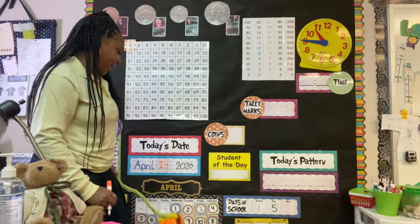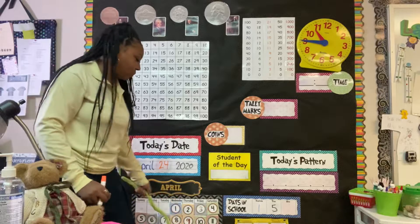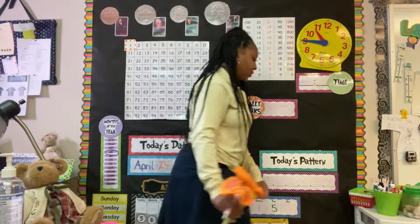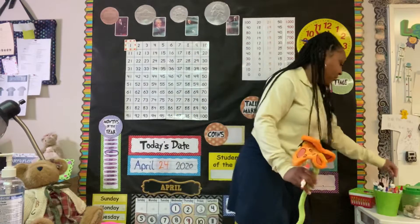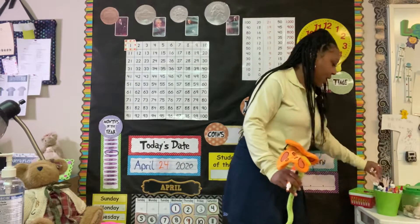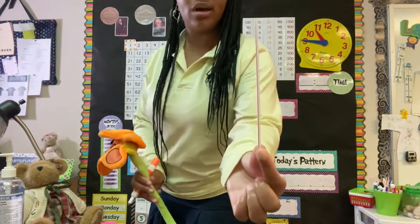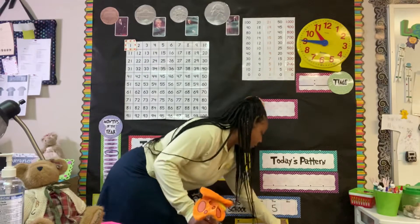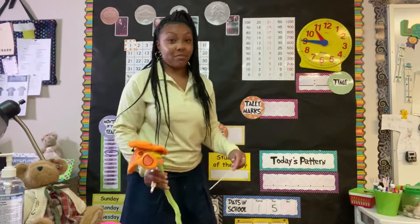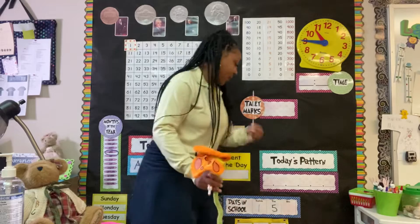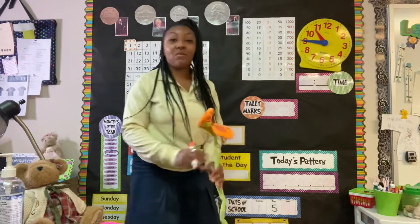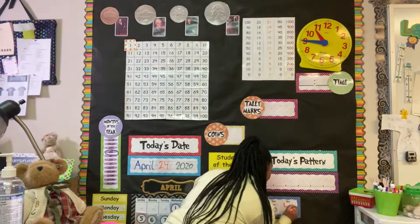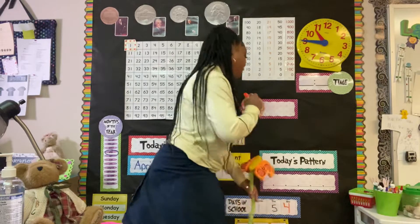It is Friday, April 24th, 2020, and let's do our days in school. Yesterday would have been 153, and if I add another straw to my ones place today, it would make it 154 days in school. So I'm going to change the ones place to a four.